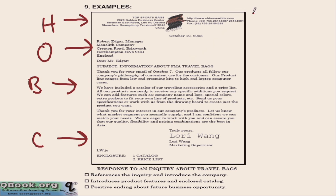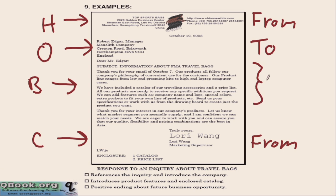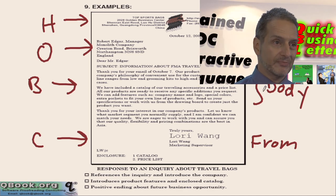Remember, the heading is who this letter is from, and the opening is who this letter is to. The complementary closing is also who this letter is from — that's the closing section. And the body section, of course, is all the things we just talked about: the three paragraphs for this letter. Good luck with answering your questions.